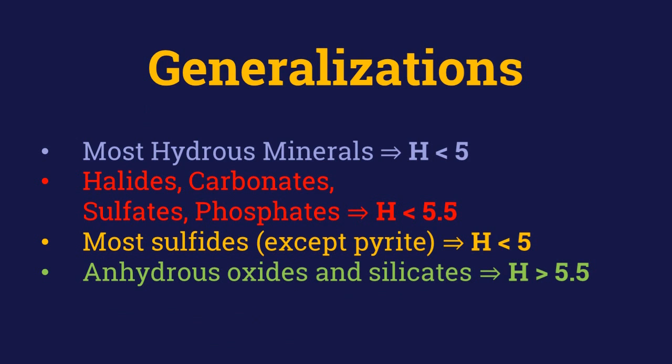As for some generalizations: most hydrous minerals, halides, carbonates, sulfates, and phosphates are relatively soft. Most sulfides are also soft, but pyrite is an exception with a Mohs hardness of 6. Anhydrous oxides and silicates are mostly hard.